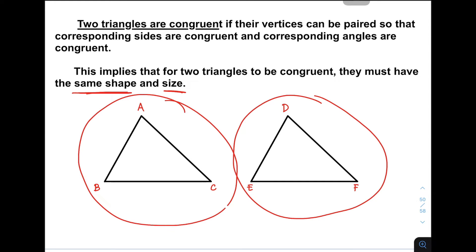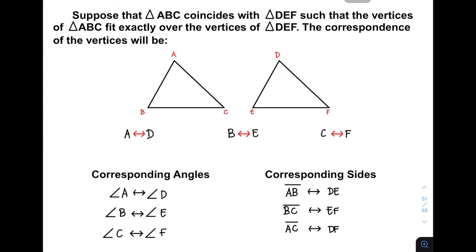In the next part of our video, I will show you that the corresponding parts are congruent so that the triangles are congruent. Suppose that triangle ABC, this is your triangle ABC, coincides with triangle DEF such that the vertices of triangle ABC fit exactly over the vertices of triangle DEF. They must coincide. The correspondence of the vertices will be this one.